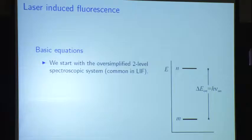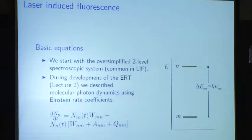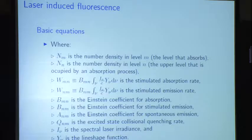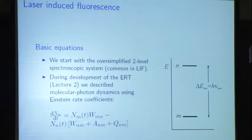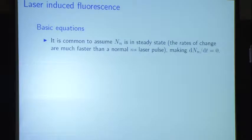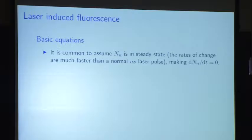Let's do a little bit about the basic equations. We use this oversimplified two-level model. When we talked about the equation of radiative transfer, we talked about these rate equations — this is how people typically analyze LIF, at least in the late 1970s and 1980s. This is the population of the lower state, the excitation rate, the population of the upper state, and the de-excitation rates: stimulated, spontaneous, and quenching.